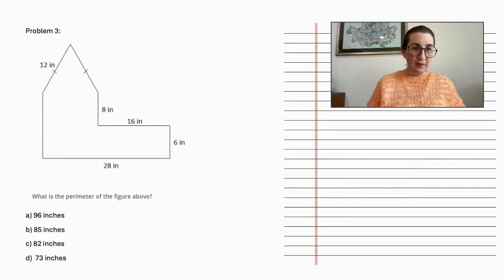Problem number three. What is the perimeter of the figure above? With an irregular shape such as this, we simply add the lengths of the sides.